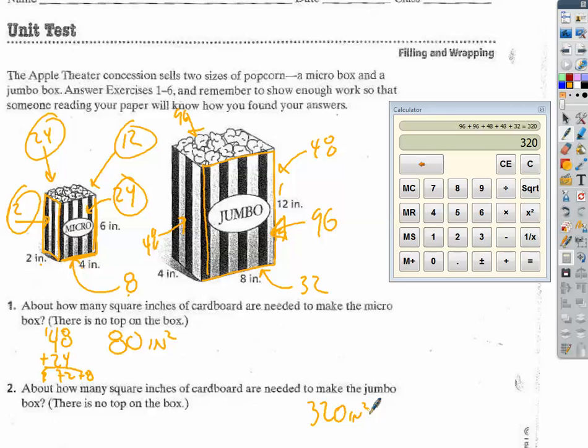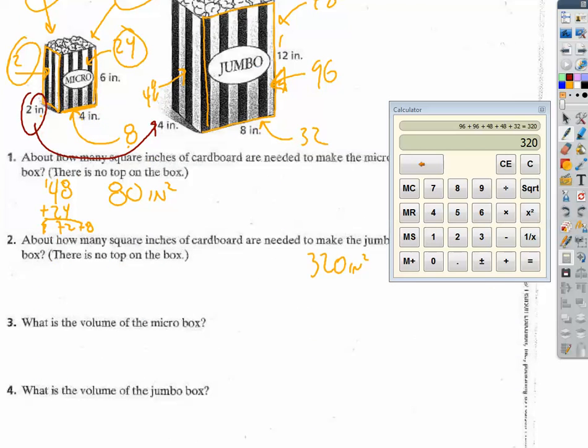Now, the other way we could have done this is we could have realized that the scale factor from the micro to the jumbo is 2. Each side length is multiplied by 2. You'll remember that when we're talking about area, area is the scale factor squared times bigger. So the scale factor in this case was 2. So 2 squared is 4. We could have just said 4 times 80.